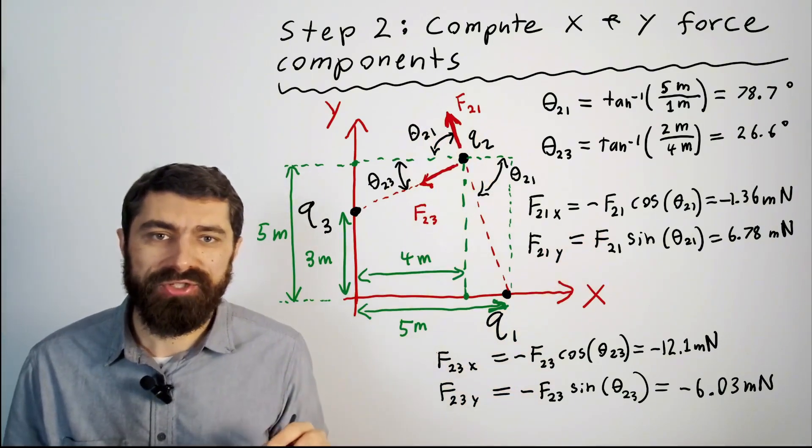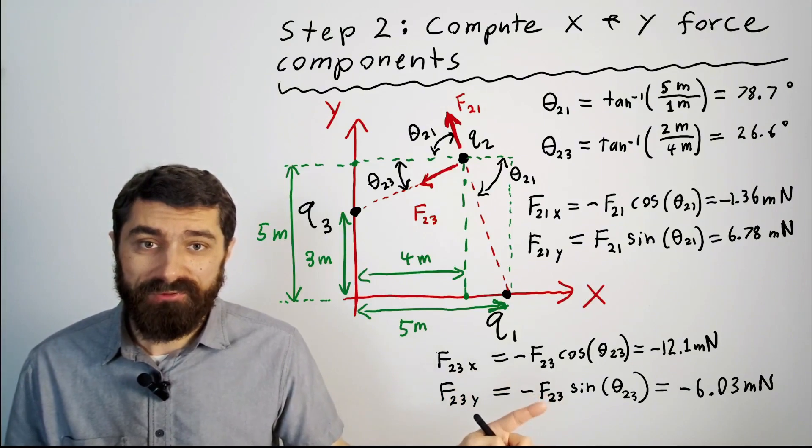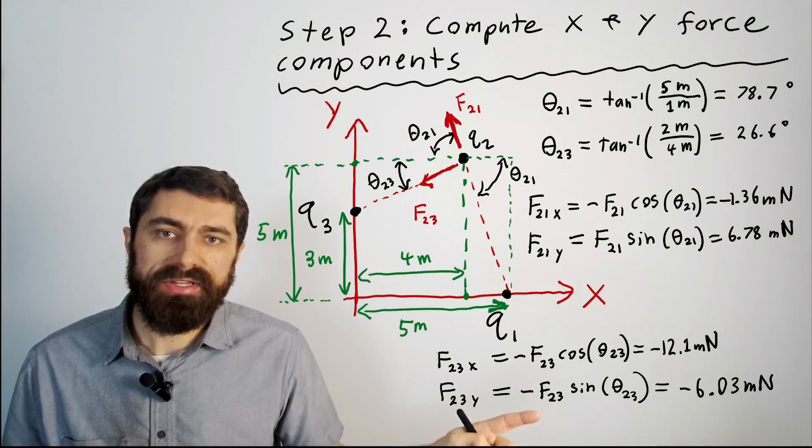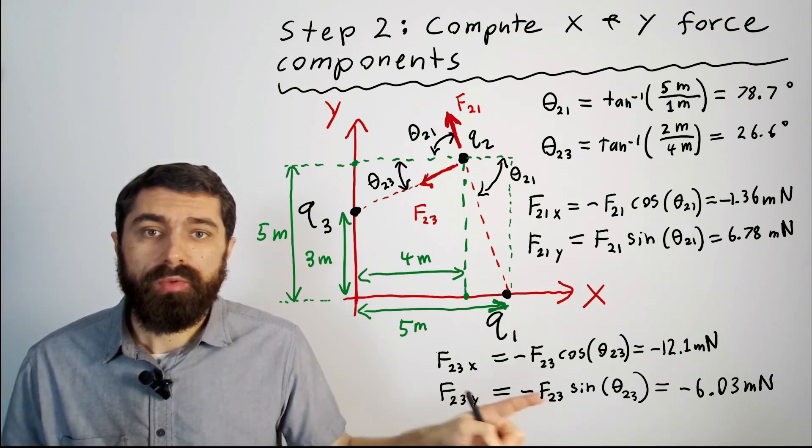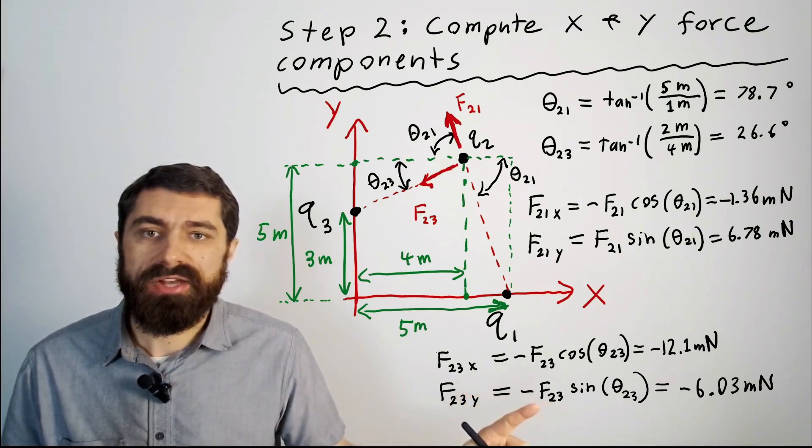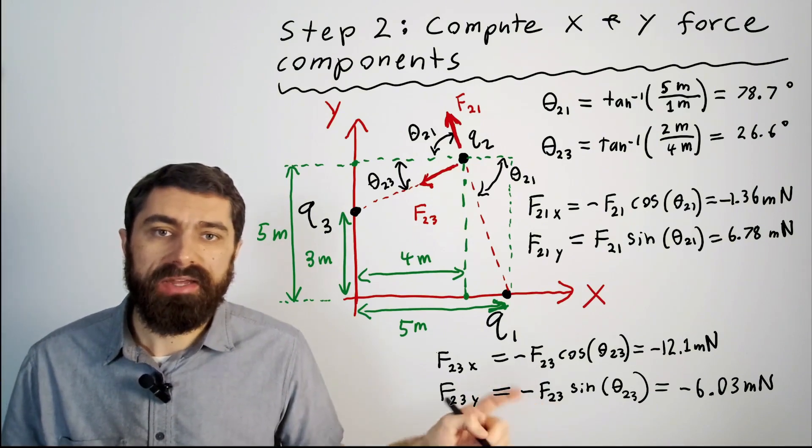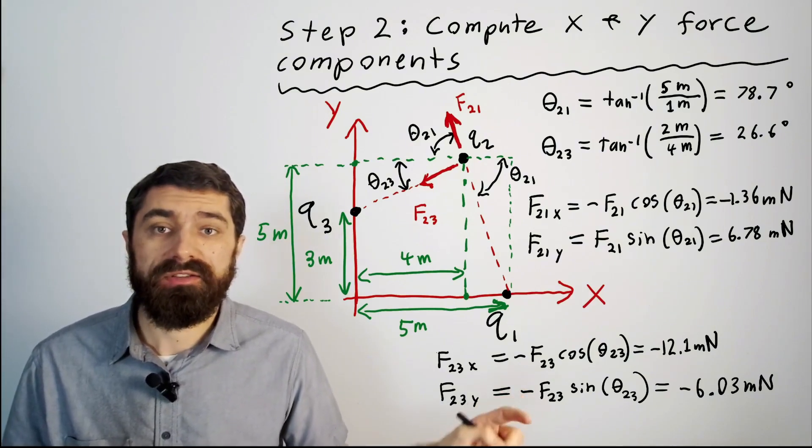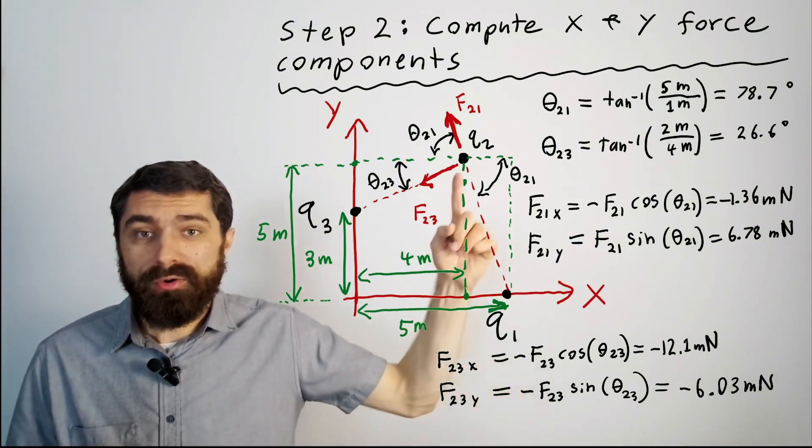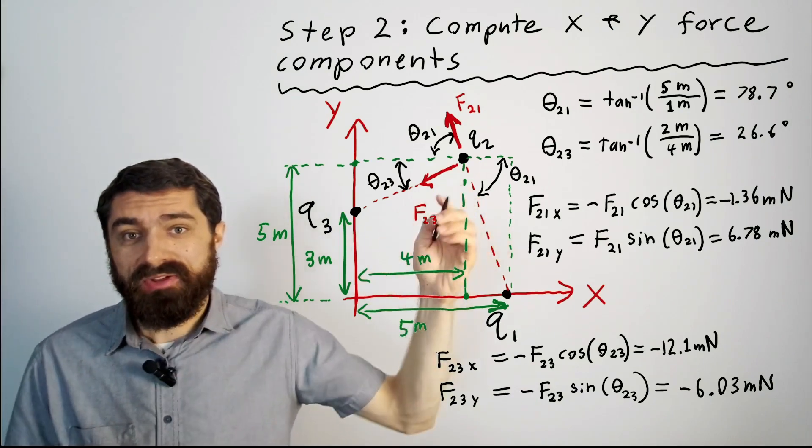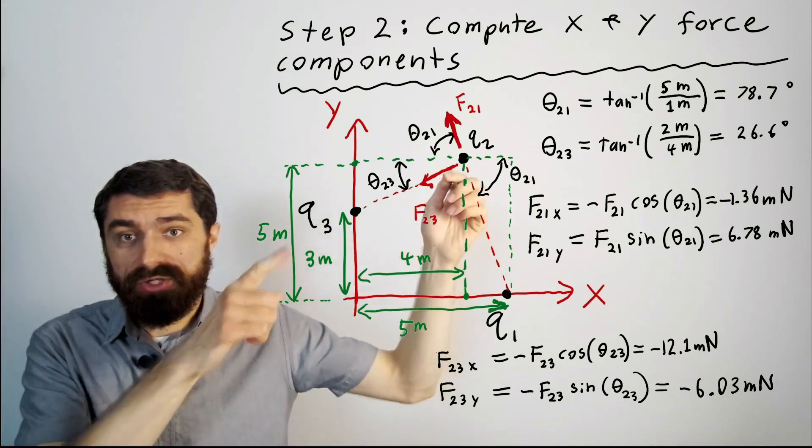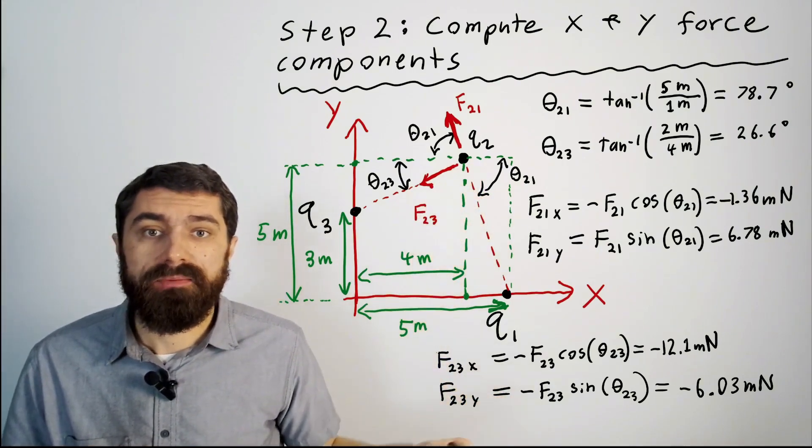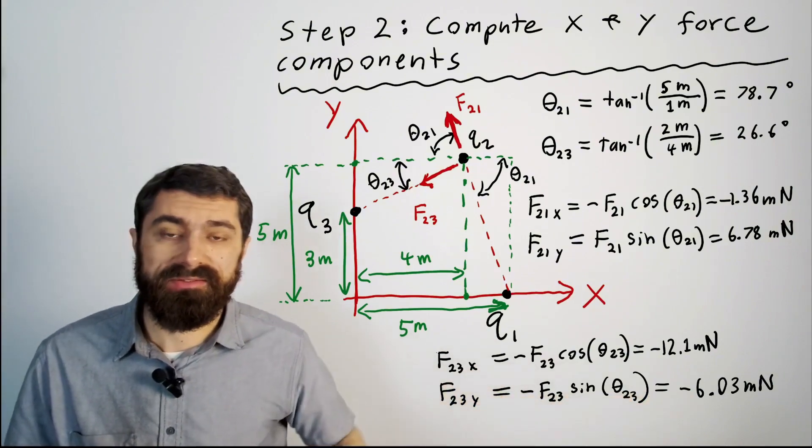Oh and real quick one thing I want to mention is this value for f23 13.5 millinewtons. We calculated in the previous slide that it was negative 13.5. Well in this equation when I plug it in here I just plug it in as positive. And the reason I did that is because the fact that it's negative just tells you that the force is attractive. But we already took into account the fact that the force was attractive by drawing our arrow in this direction here. And so we take that into account already with the negative sign here. So you plug that in and you get that value there.